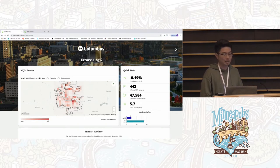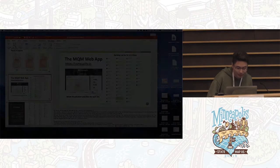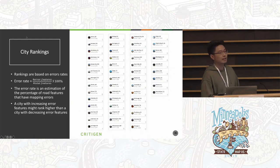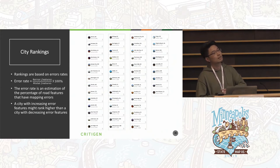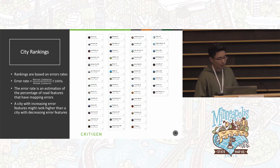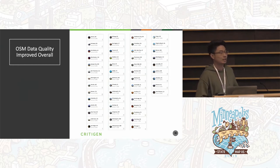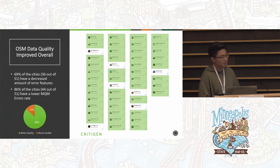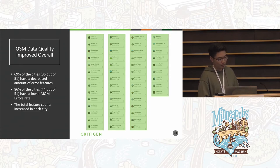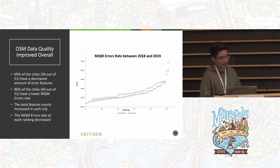Now, the ranking is based on the errors rate — a rough estimation of the percentage of roads that have mapping errors. Because it's a percentage, a city with increasing error features might rank higher than a city with decreasing road errors, making ranking changes dynamic and unpredictable. However, we observed that overall data quality has improved in OSM within the last year. We saw 69% of cities have a decreased amount of error features and 86% have a lower MQM errors rate. Total feature counts increased in each city, meaning more roads were digitized. The MQM errors rate at each ranking decreased — so overall, quality increased for these 51 cities by our standards.